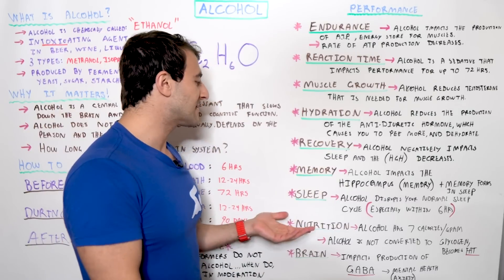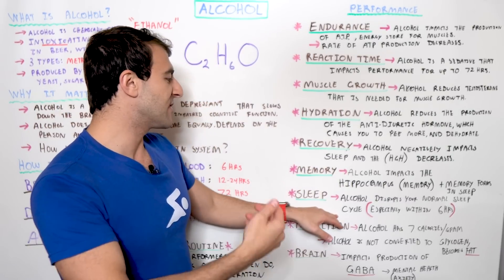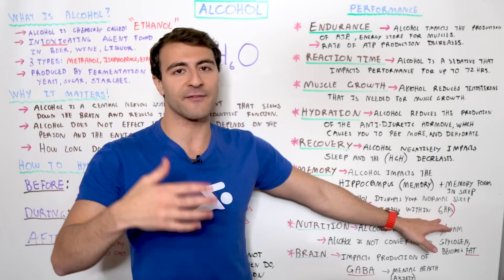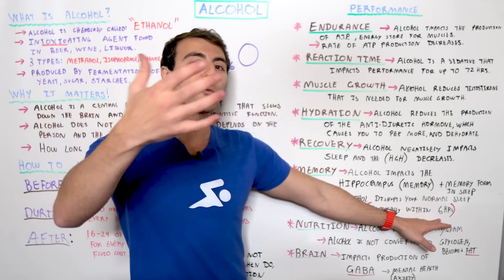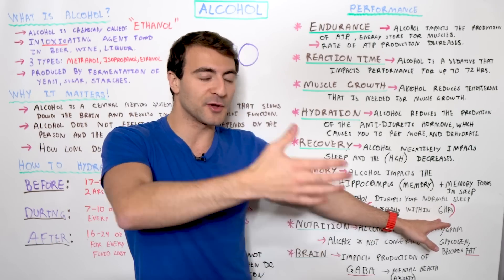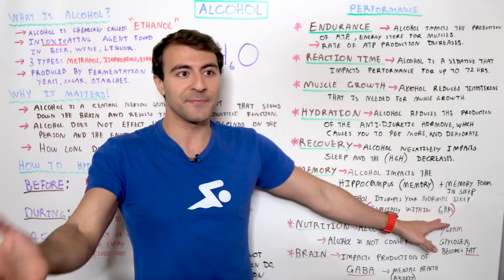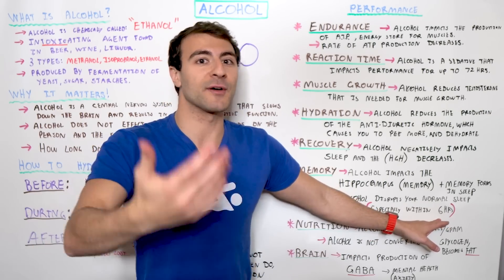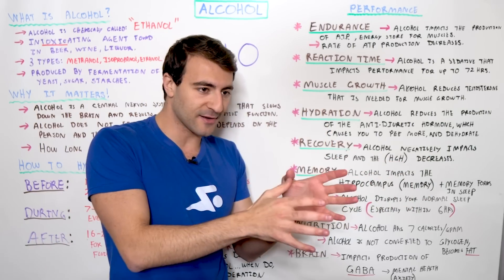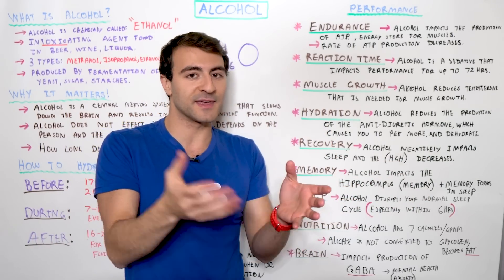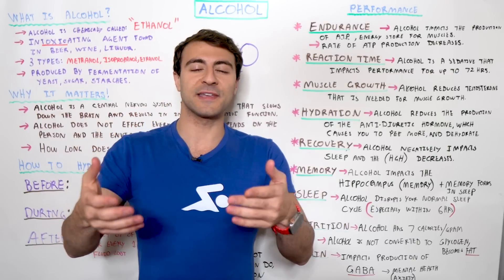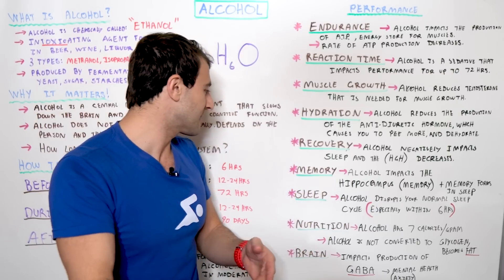You're going to have a less efficient sleep cycle, and this happens especially if you have alcohol within six hours of actually going to sleep. If you have alcohol and then go to sleep right away, that's going to mess up your sleep cycle the most. If there's a longer period of time between the alcohol consumption and when you go to sleep, then your sleep is going to be less impacted.